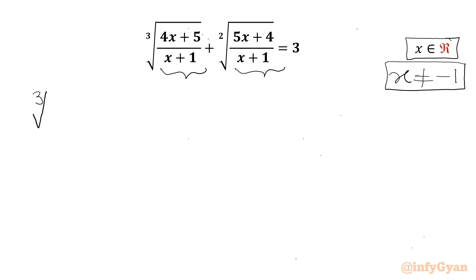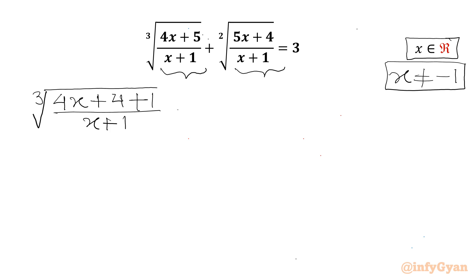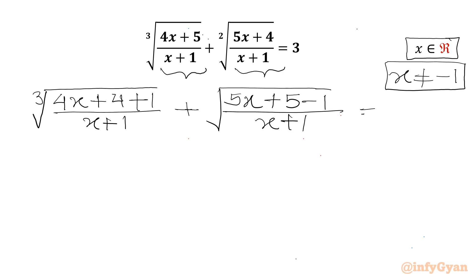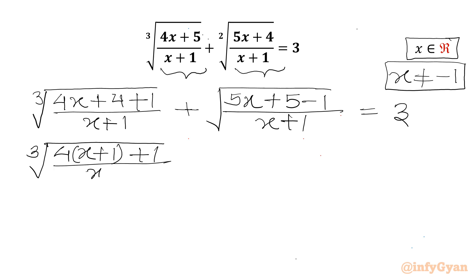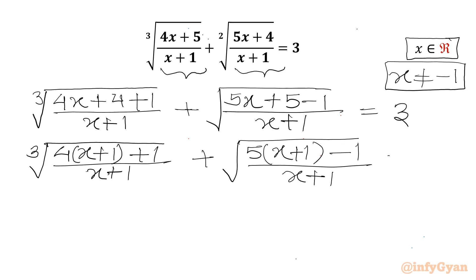Now I'll rewrite the equation. The numerator 4x + 5 can be written as 4(x+1) + 1, and the numerator 5x + 4 can be written as 5(x+1) - 1. So we get: cube root of [4(x+1) + 1]/(x+1) plus square root of [5(x+1) - 1]/(x+1) equals 3.